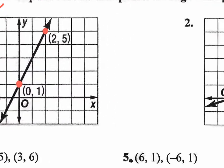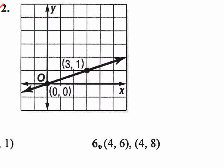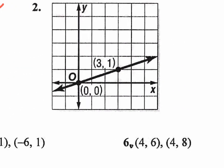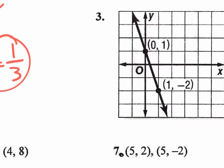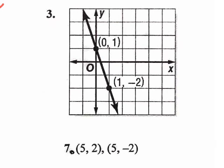You guys can try number two, which is really easy. What's the slope here? From here to here, what's the rise? One, three. So the slope is one over three — that's right. One over three is the slope. m equals one over three.